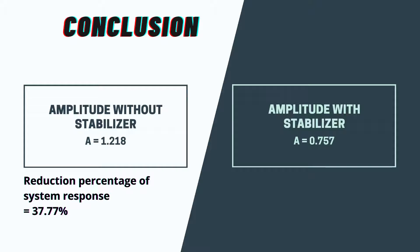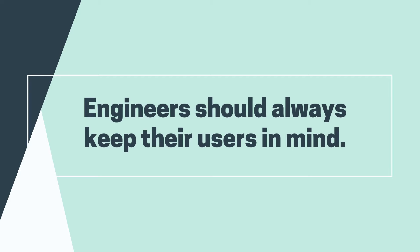In conclusion, the absorber reduces the vibration of the whole system, meaning the amplitude of the system is also lower. The amplitude without stabilizer is 1.218, while the amplitude with stabilizer is 0.757, which is lower than the amplitude without stabilizer. The reduction percentage is 37.77%. That's all from us — thank you for watching.